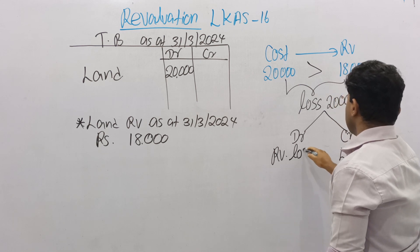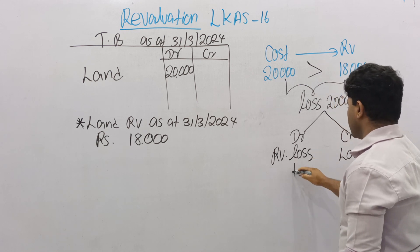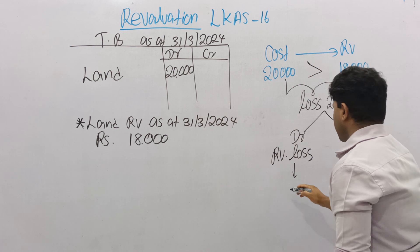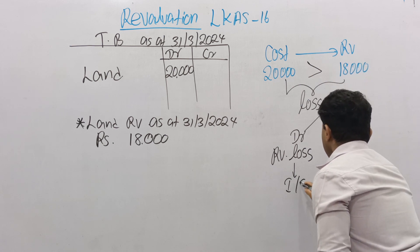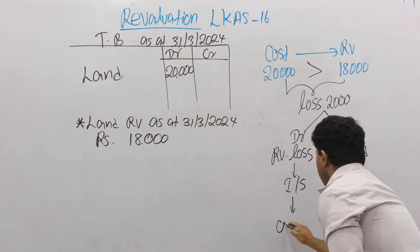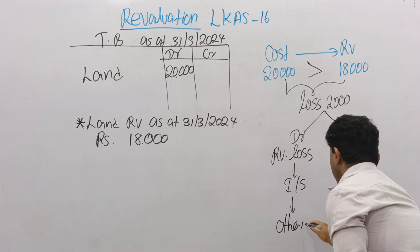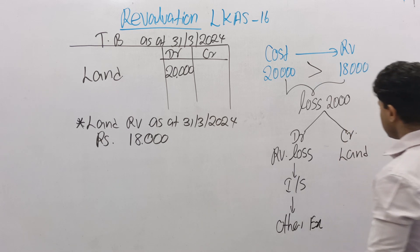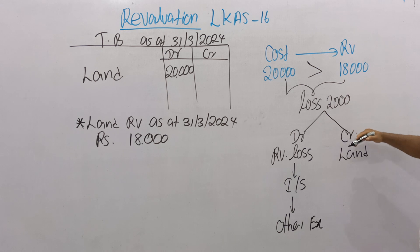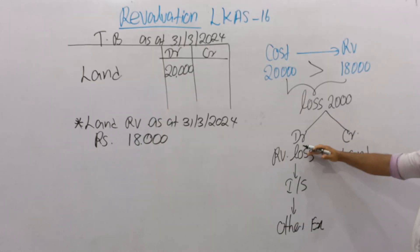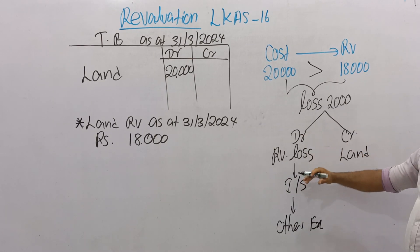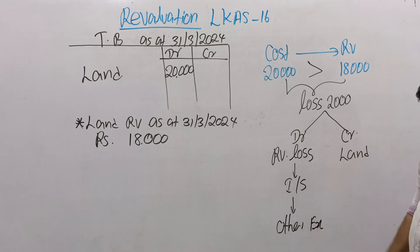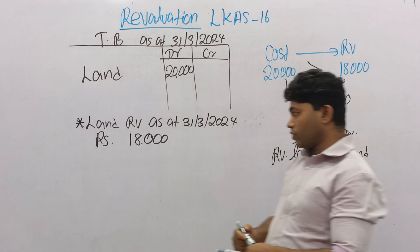Revaluation loss is an expense and should be recorded in the financial statement under other expenses. Think about how to disclose it on the financial statement. Since the land decreases, land account is credited. Revaluation loss is an expense and should be recorded in the income statement under other expenses.